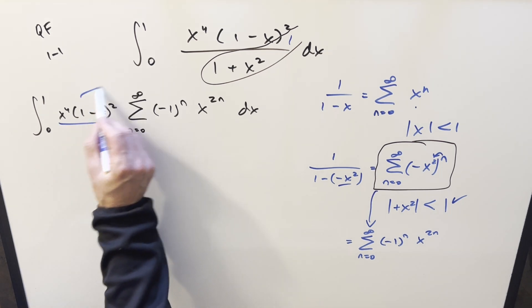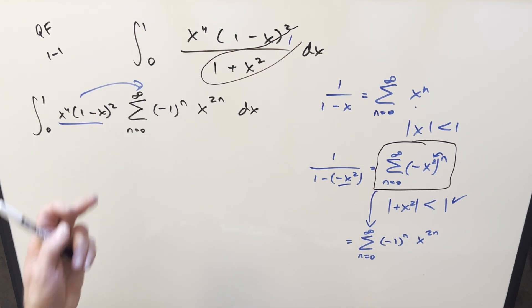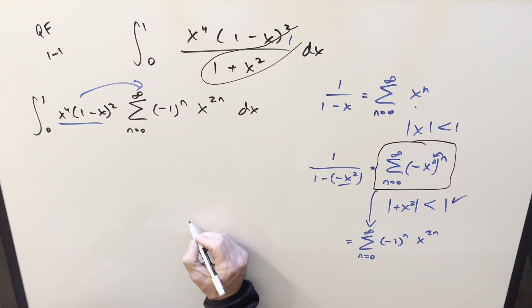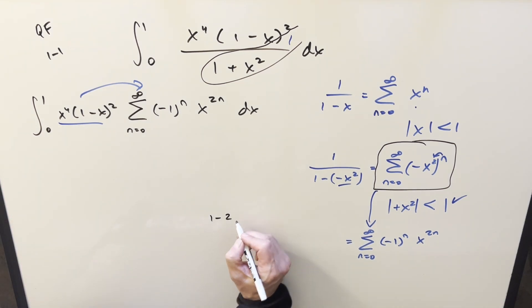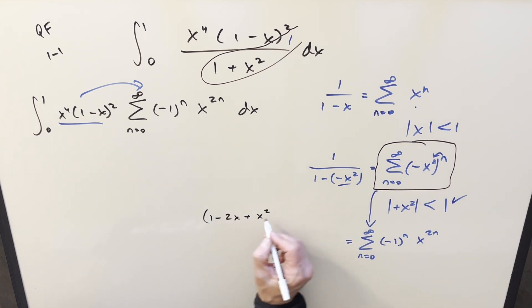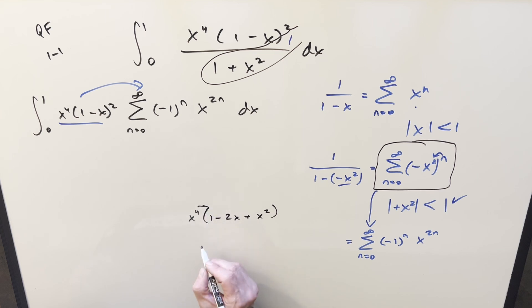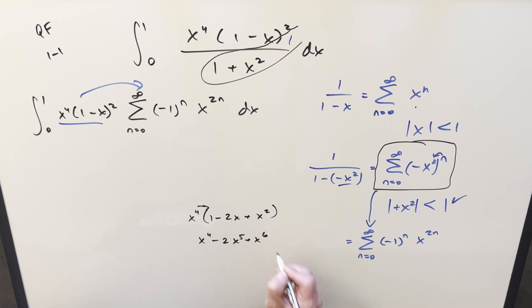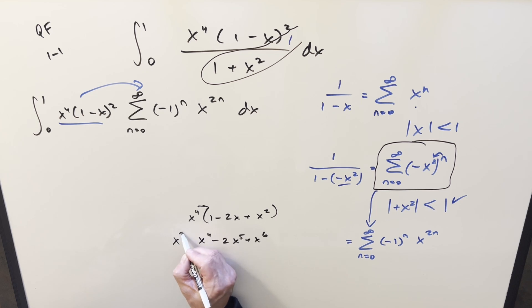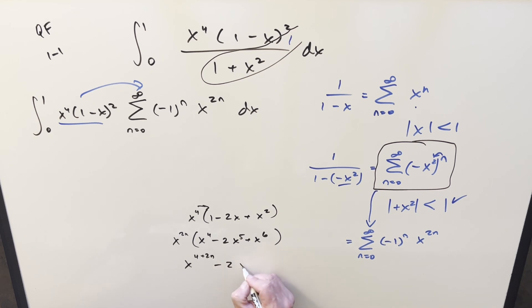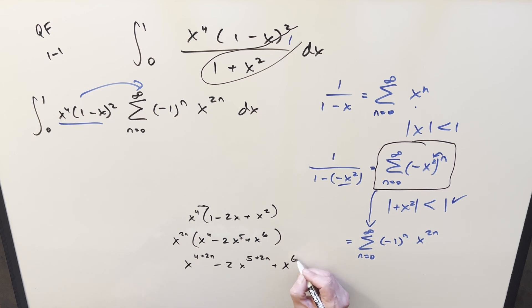Before distributing everything inside the sum, let's simplify first. Multiplying out (1 minus x) squared gives one minus two x plus x squared. Distributing x to the fourth through that gives x to the fourth minus two x to the fifth plus x to the sixth. Then multiplying by x to the two n, we get x to the (4+2n) minus two x to the (5+2n) plus x to the (6+2n).